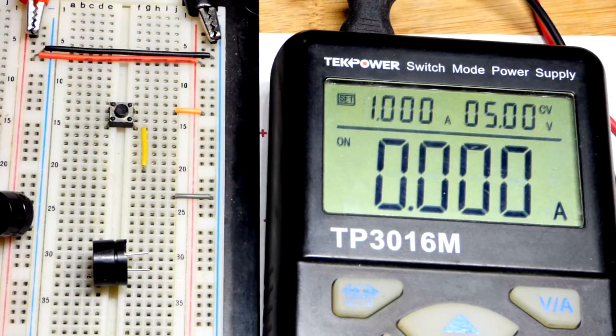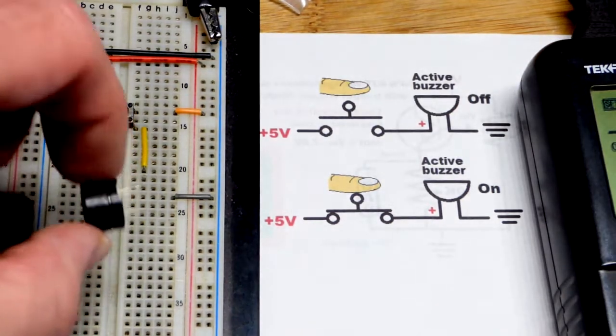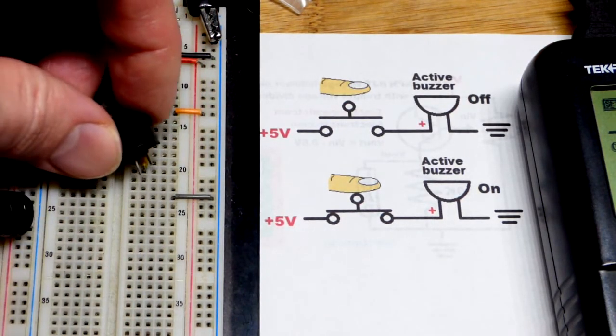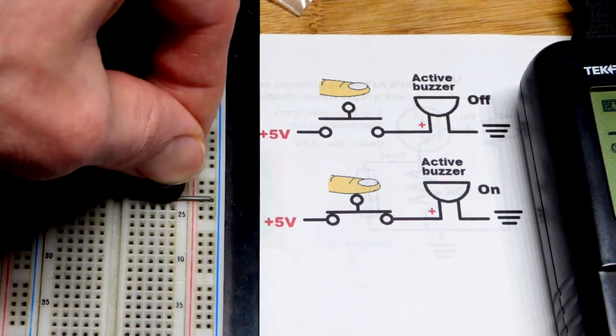So now, if you accidentally grab a passive buzzer, then we'll put this one in. We're still going to put the plus to the more positive side up there. And then the minus down to the jumper.